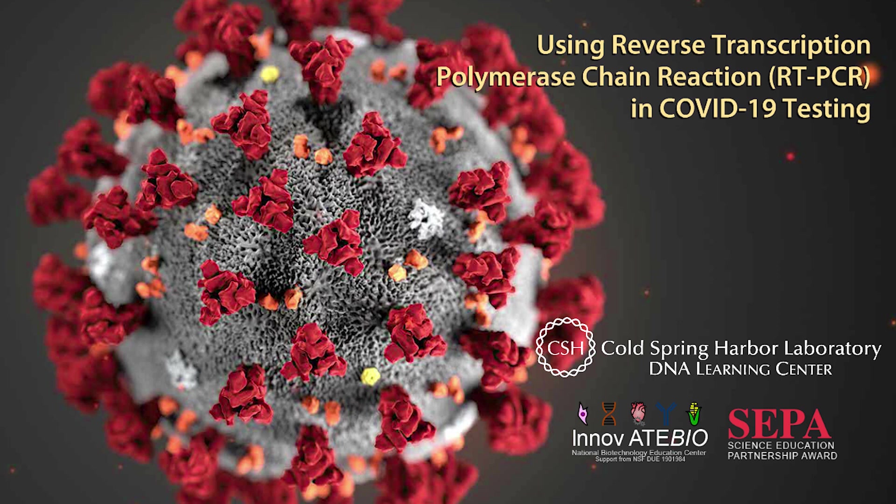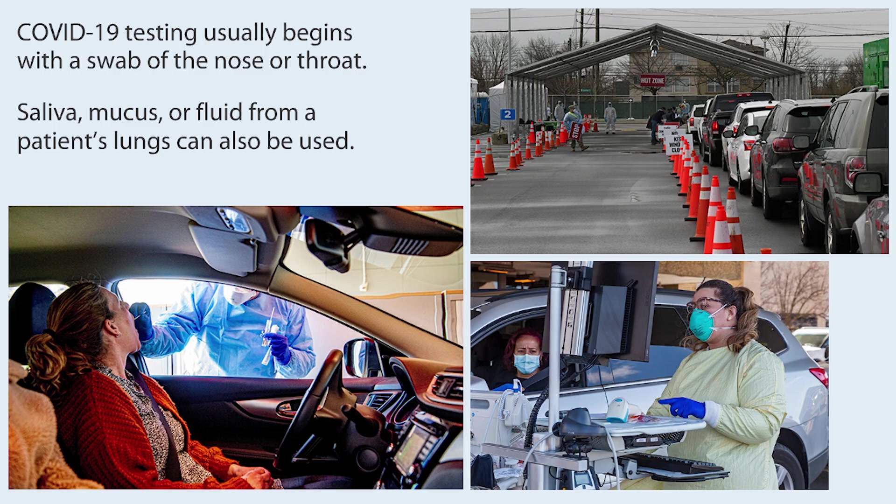Using Reverse Transcription Polymerase Chain Reaction, RT-PCR, in COVID-19 testing. COVID-19 testing usually begins with a swab of the nose or throat. Saliva, mucus, or fluid from a patient's lungs can also be used.